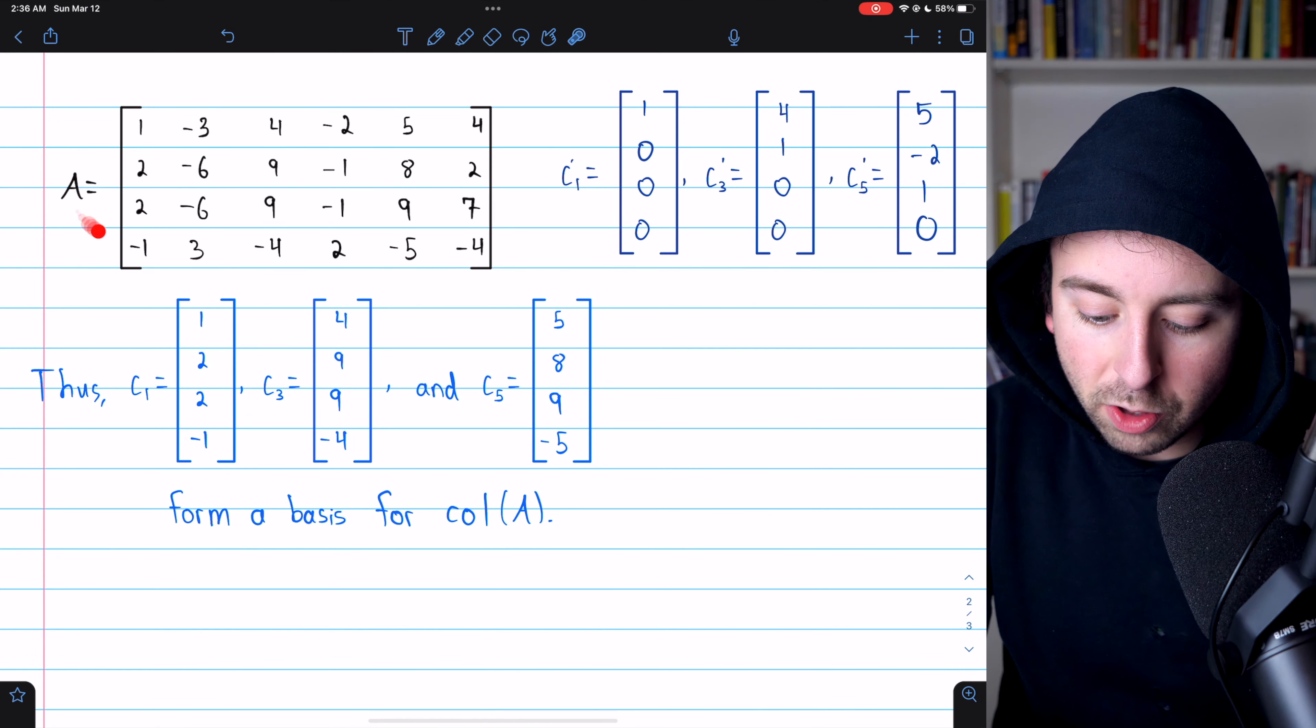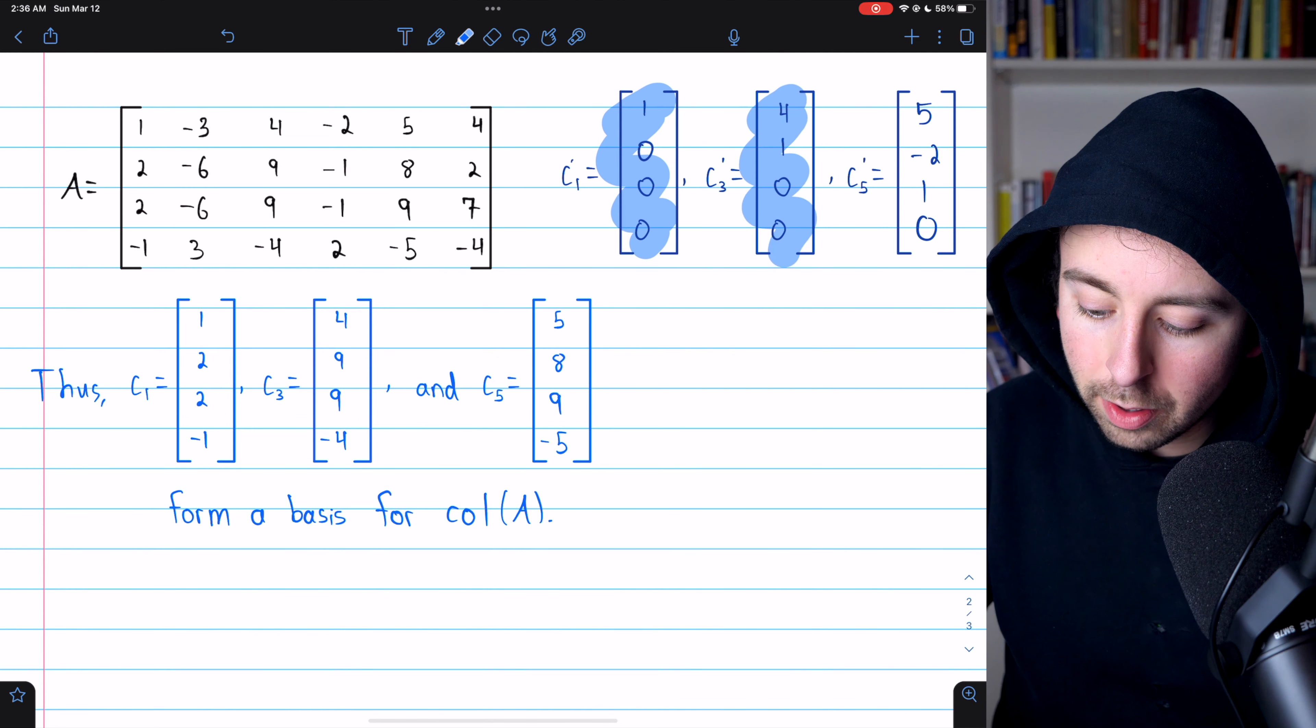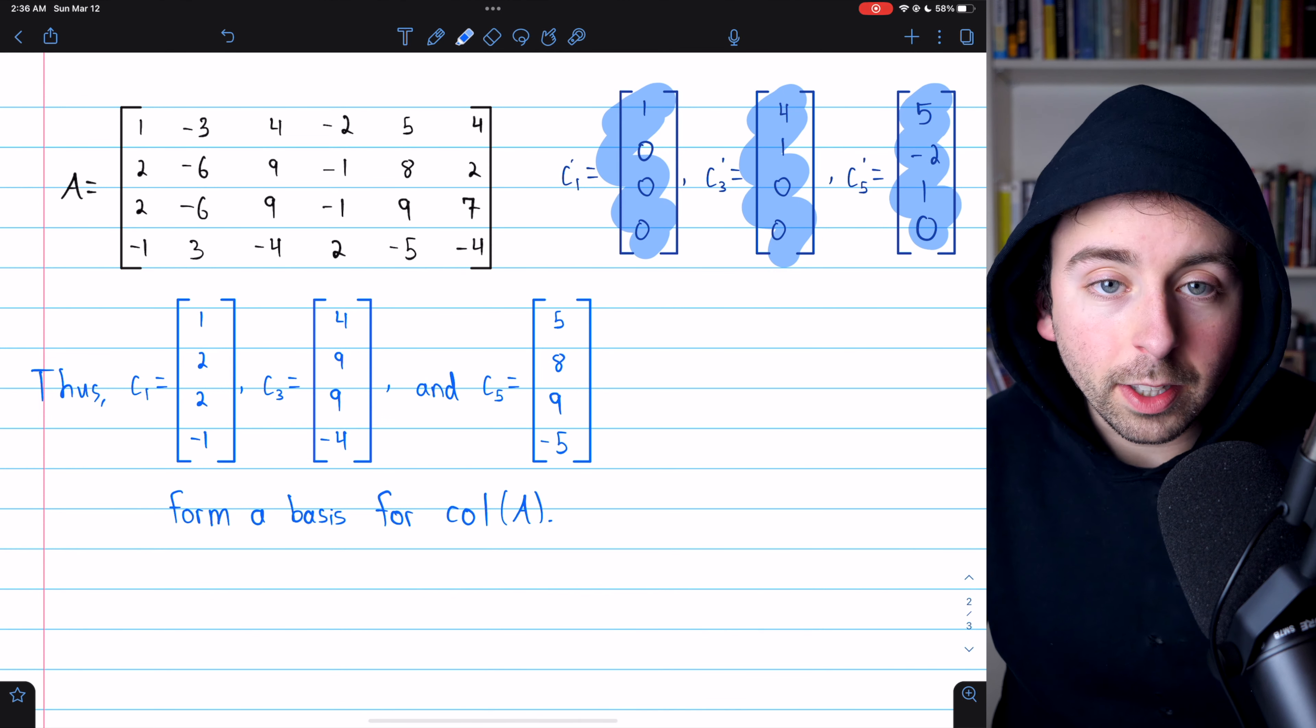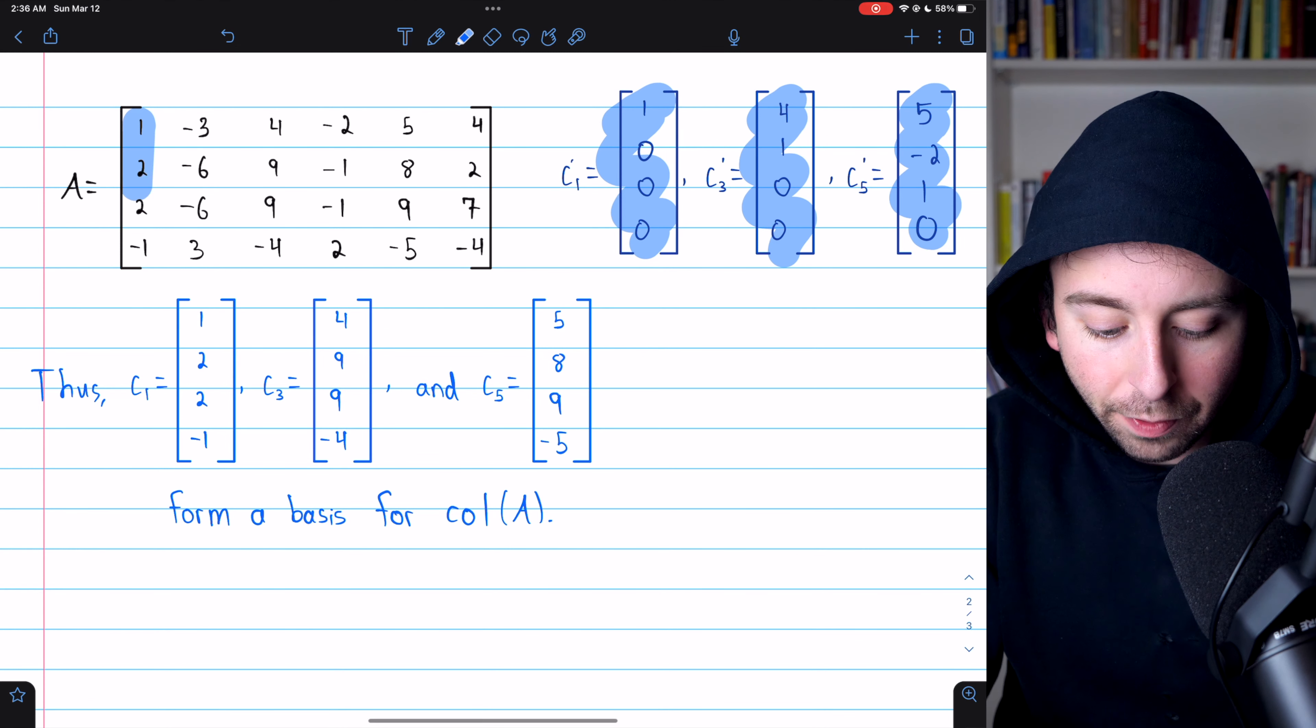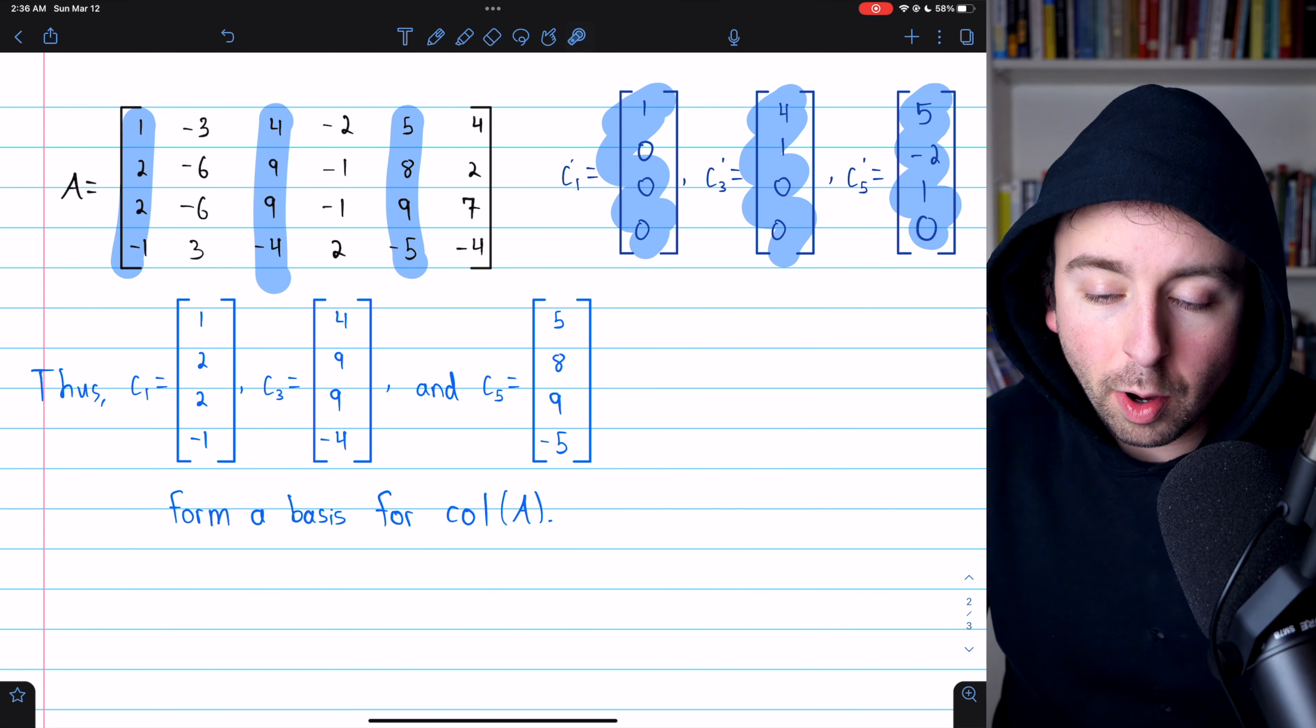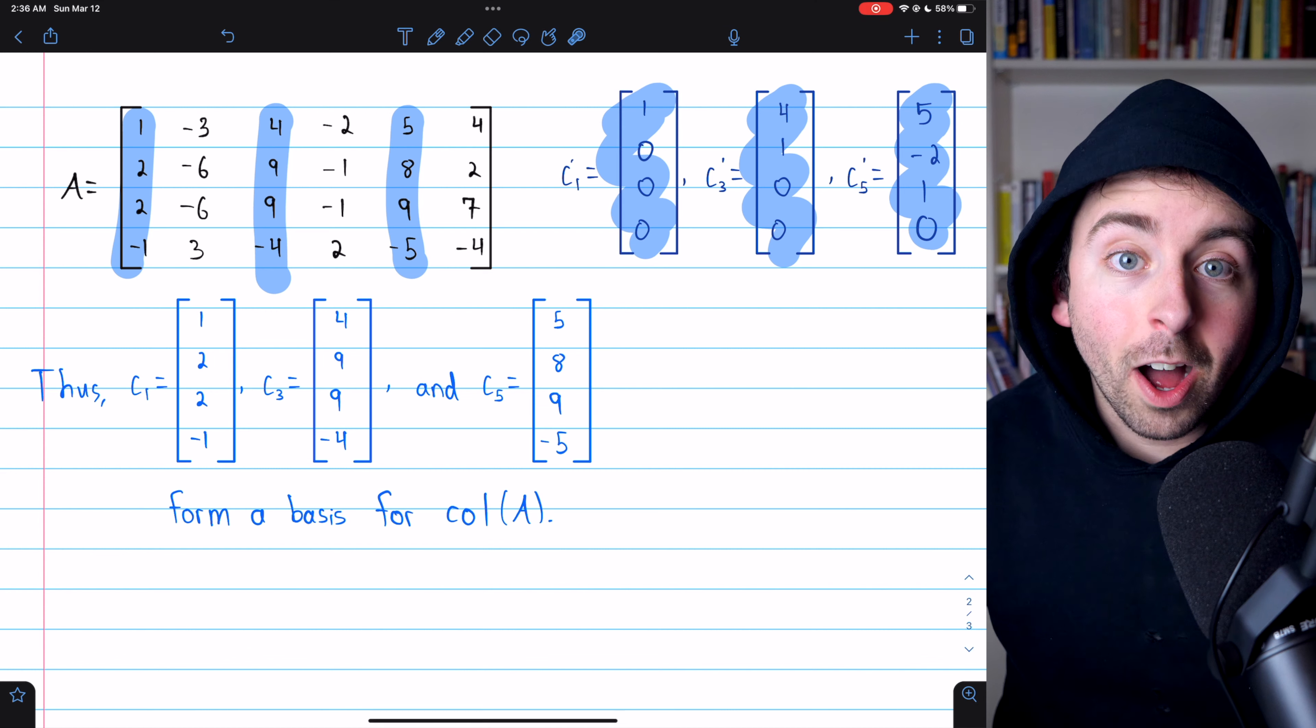This is our original matrix A, and as we saw in the echelon form, it was the first, third, and fifth columns that contained the leading ones. Thus, it's the first, third, and fifth columns from our matrix A that will form a basis for the column space.